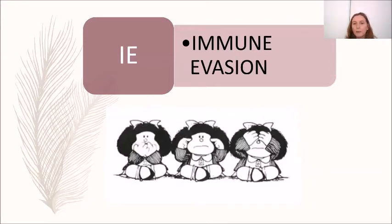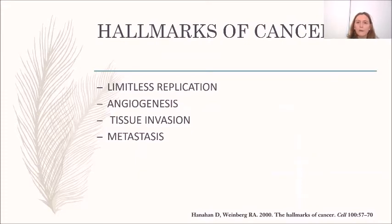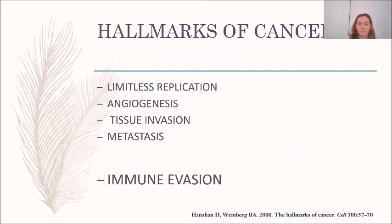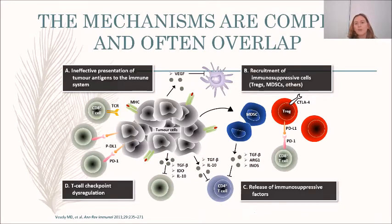So we see how tumors can evade the immune system. Hanahan and Weinberg described the hallmarks of cancer — limitless replication, angiogenesis, tissue invasion, and metastasis — but a fifth hallmark would be immune evasion. The mechanisms of immune evasion are complex and often overlap.